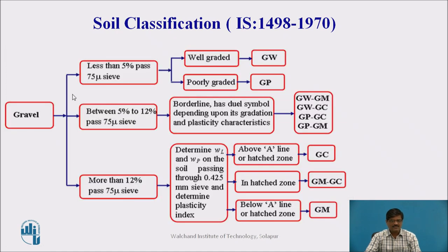Gravel is further classified based on the fine materials present. If less than 5% passes the 75-micron sieve, we have two options: well-graded or poorly-graded. If it is well-graded, the symbol is GW — G stands for gravel and W stands for well-graded. If it is poorly-graded, the symbol is GP — G for gravel and P for poorly-graded.